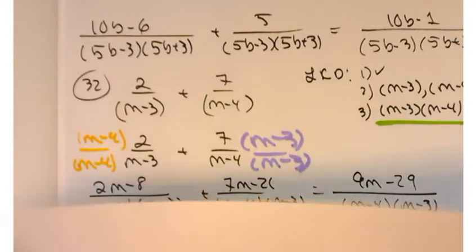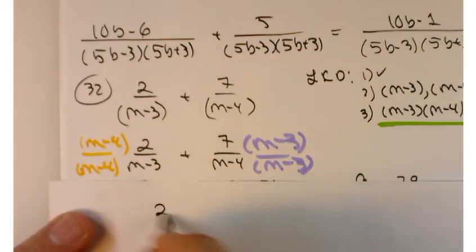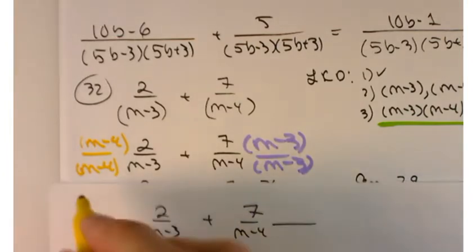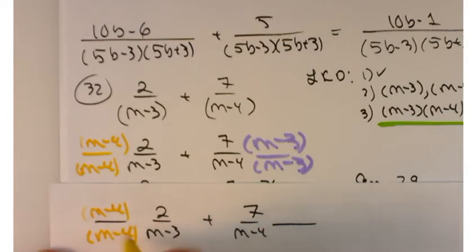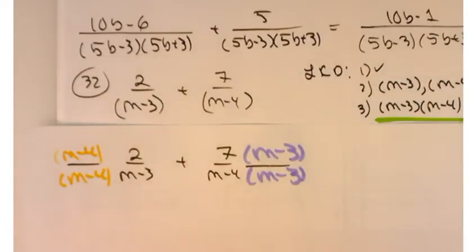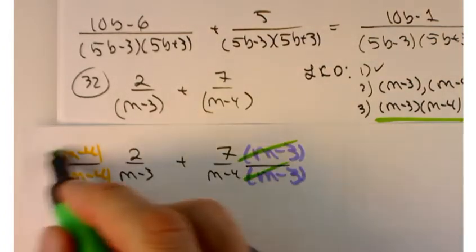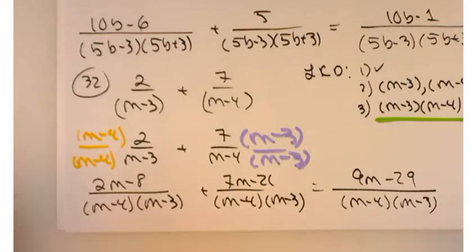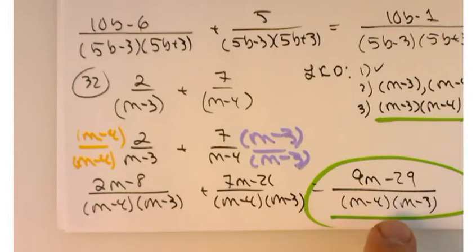One mistake I often see: students work hard to get a common denominator, then immediately cancel factors from numerator and denominator — which undoes the common denominator and takes you back where you started. You're running in a circle. Avoid that temptation. Here is your final answer: 9m minus 29 over m minus 4 times m minus 3. Nothing here factors for extra cancellation, but be aware that some problems will have that.